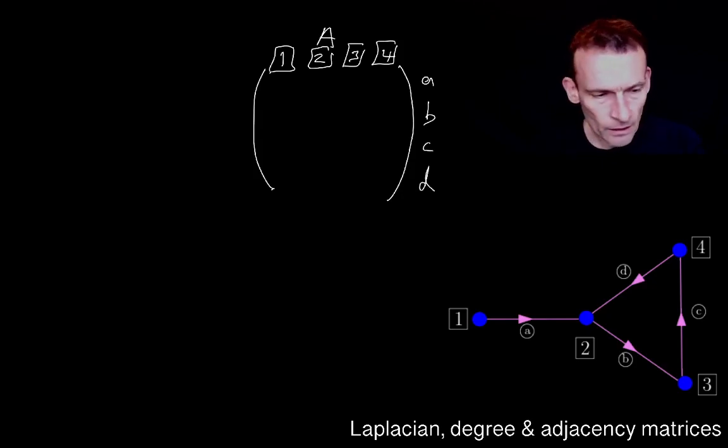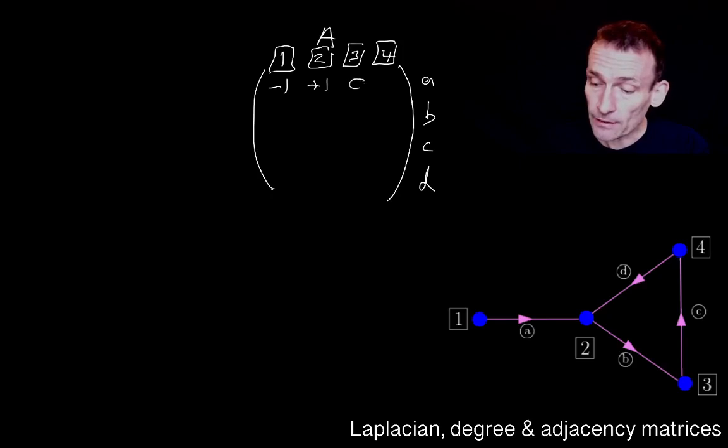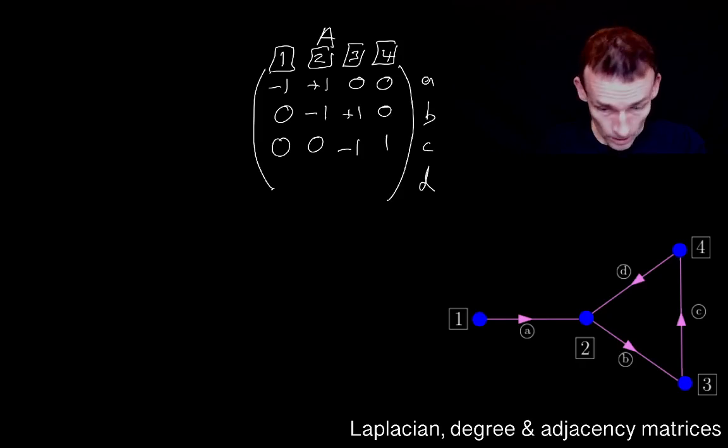You remember how to do this. Let's go to edge a. We want to fill in the rows. Remember we put a minus one in the column with node one because the edge with the arrow that I've chosen, by the way I chose those arbitrarily, goes out of node one and into node two and it doesn't go near nodes three and four. Edge b goes out of node two into node three, doesn't touch the others. Edge c comes out of node three and into node four, doesn't touch the others. And edge d looks like it goes out of node four and into node two. Yes, node two. There we go.